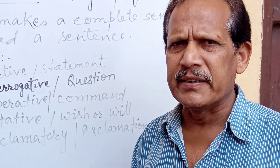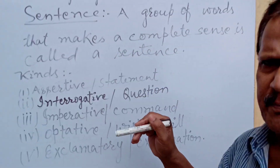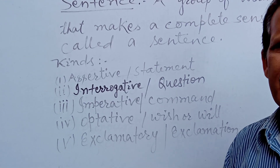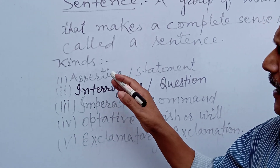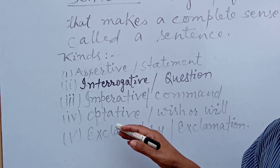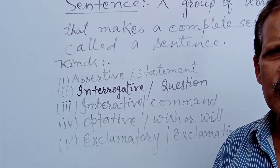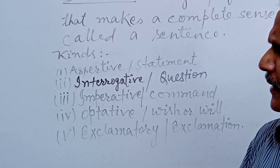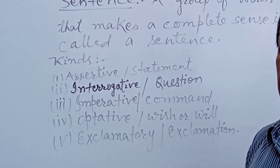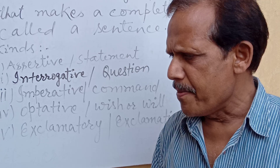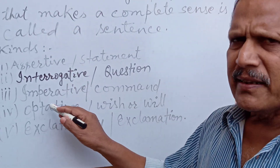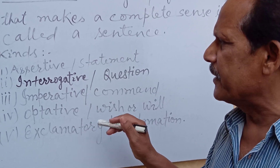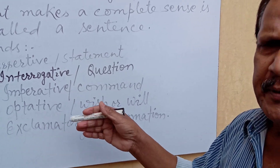Now, its kinds. Sentences are of five kinds according to traditional grammar. But in modern grammar, you will see only four kinds. The optative — the fourth kind — is not included in modern grammar. But I will explain what optative means and what type of sentence it is, in this very class.